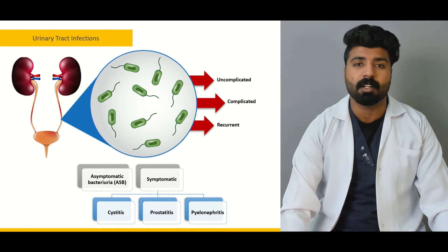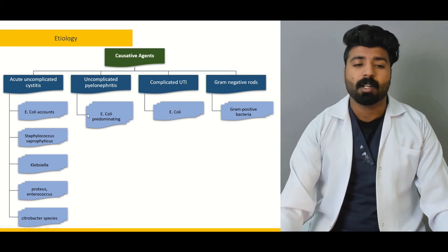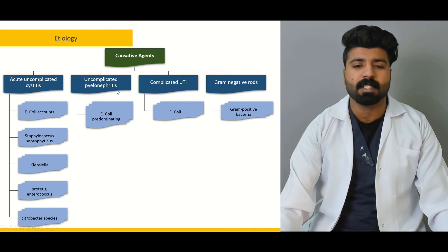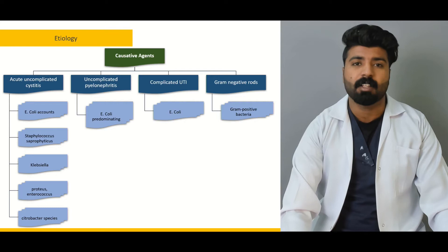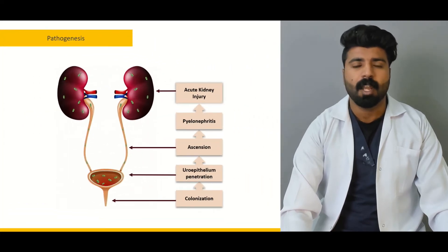Next, we're going to talk about what organisms cause this pathology. We're going to discuss what causes acute uncomplicated cystitis, what causes acute uncomplicated pyelonephritis, and what causes complicated UTIs — covering different organisms and the pathology they produce.